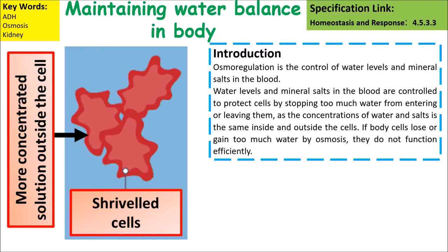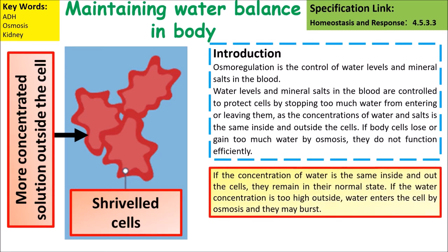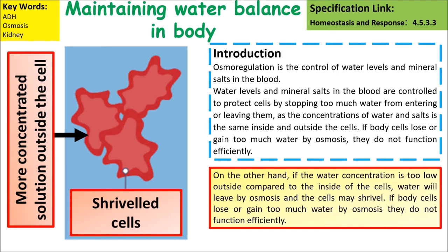Water levels and mineral salts in the blood are controlled to protect the cells by either stopping too much water from entering or leaving them by osmosis. If the concentration of water is the same inside and outside the cells, they will remain in the normal state. If the water concentration is too high outside, water will enter the cells by osmosis causing them to burst. On the other hand, if water concentration is too low outside compared with the inside, water will leave by osmosis causing them to shrivel up, as you can see in the diagram.